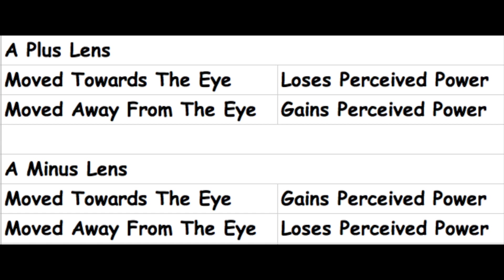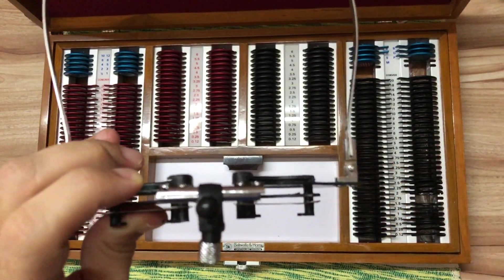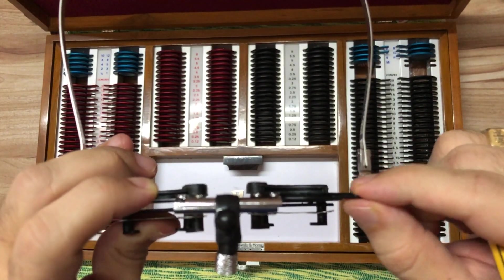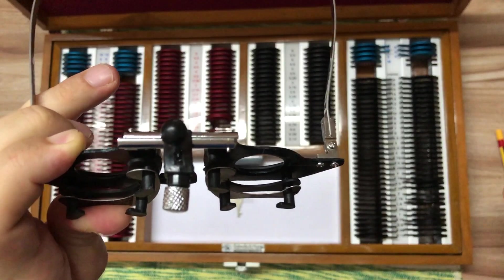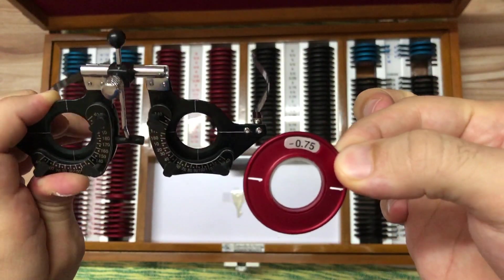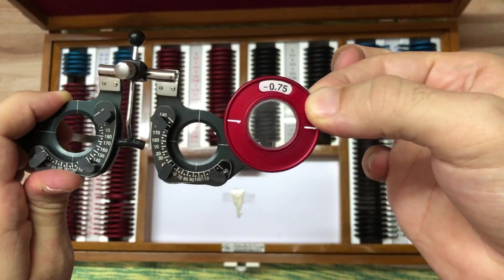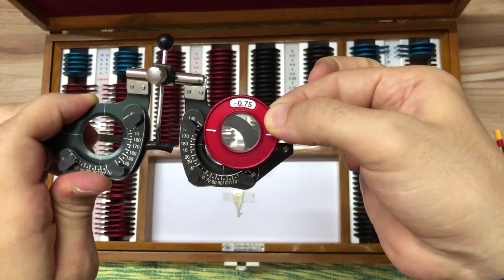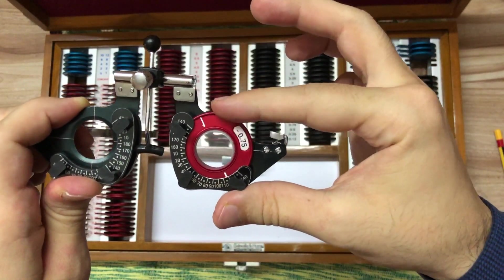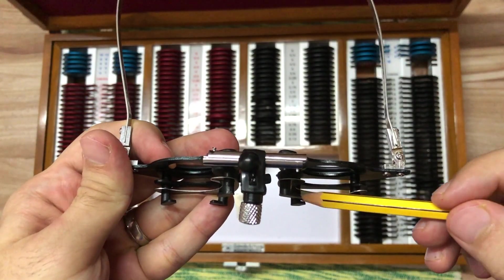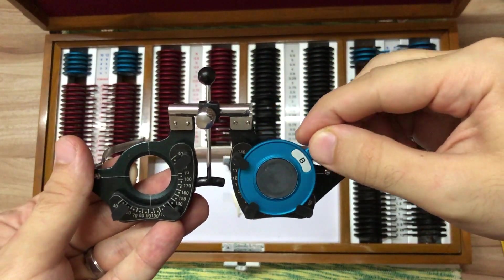In the second compartment of the trial frame, we place the spherical lenses. The third compartment must be exclusively used for cylindrical lenses, because unlike spherical lenses, these need to be adjusted precisely on an axis. The axis dial lets us know which axis the cylinder is placed at.